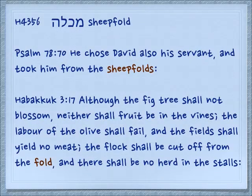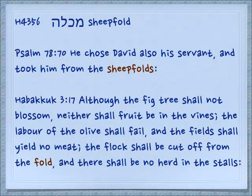Another place of restraint would of course be the sheepfold. Psalm 78:70: 'He chose David also his servant and took him from the sheepfolds.' Habakkuk 3:17: 'Although the fig tree shall not blossom, neither shall fruit be in the vines, the labor of the olive shall fail, and the fields shall yield no meat — the flock shall be cut off from the fold and there shall be no herd in the stalls.'